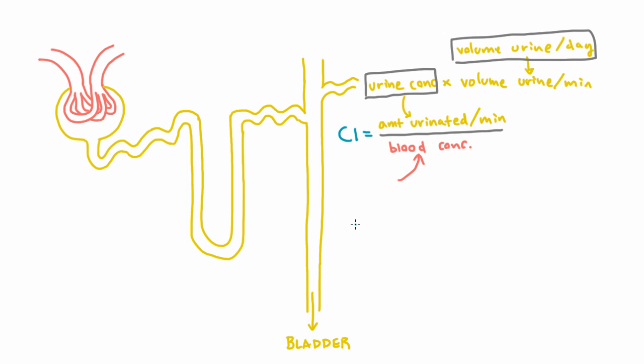And so the way that this is often written out is clearance is equal to the urine concentration times the urine flow rate. And this is written as a V with a little dot over it. The V means volume and the dot means over time, so the change over time.